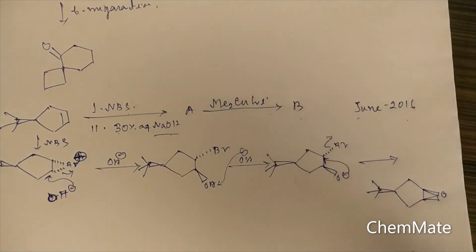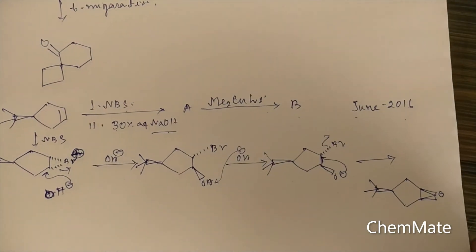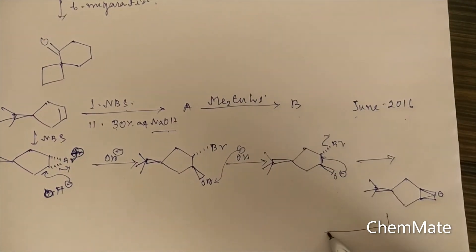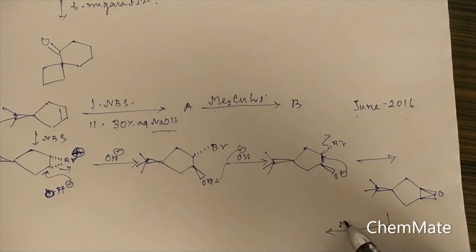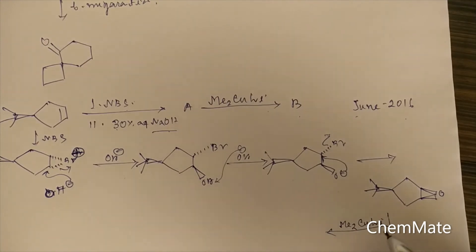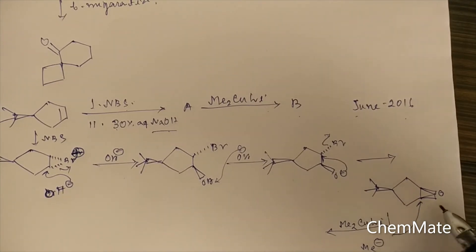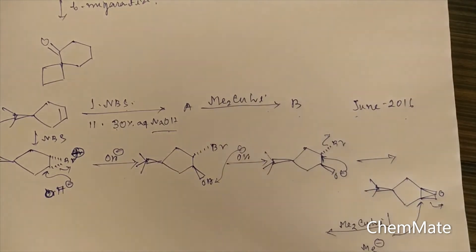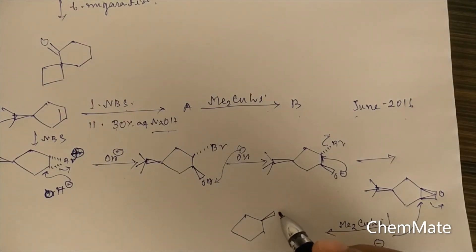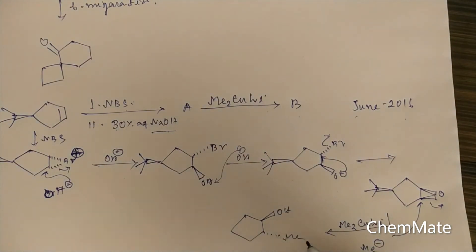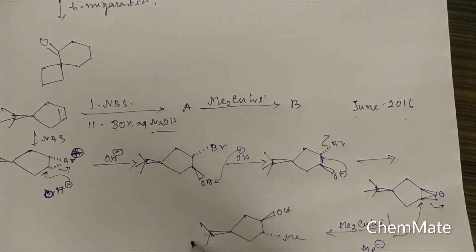Now if treated with Me2CuLi — this is an organometallic reagent — the methyl carbanion (Me⁻) will attack from below the plane to open up the epoxide ring. The product will have OH on one carbon and a methyl group on the adjacent carbon, with the tertiary butyl group remaining above the plane.